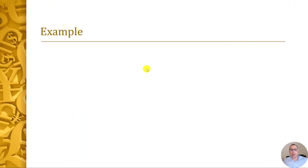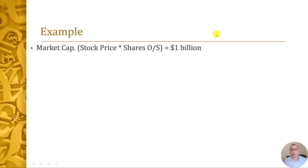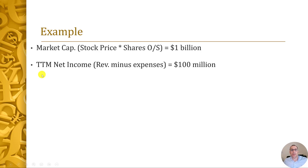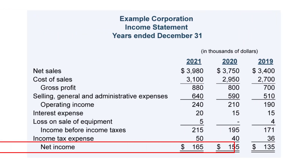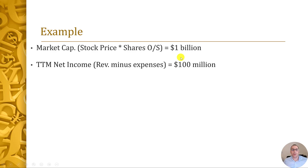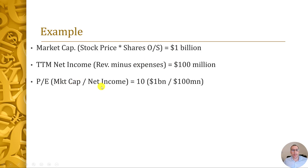Let's do an example so it makes a little more sense. Let's look at a company that has a market cap of $1 billion. Market cap is stock price times shares outstanding — you can get this on Yahoo Finance or dozens of other websites. The market cap is how much money that company is worth according to the stock market. You also need the company's trailing 12-month net income. To get this, just look at the income statement for the past four quarters — the bottom of the income statement is their net income. In this example it's going to be $100 million. Net income is their revenue minus their expenses. So the PE is the market cap over the net income — in this example it's 10: $1 billion over $100 million.